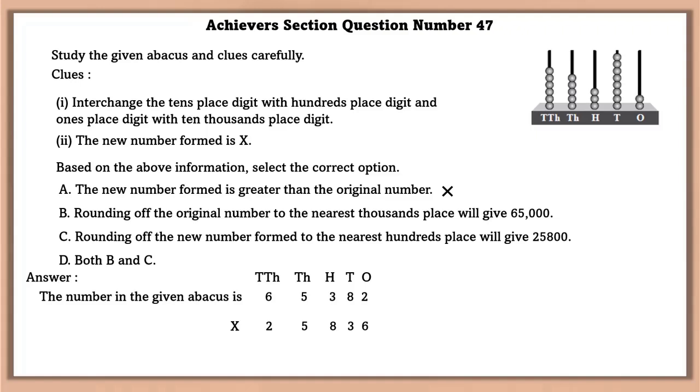Rounding of the original number to the nearest thousands place will give us 65,000. Yes, this is true. Rounding of the new number formed to the nearest hundreds will give us 25,800. Yes, this is also true. So B and C are true.